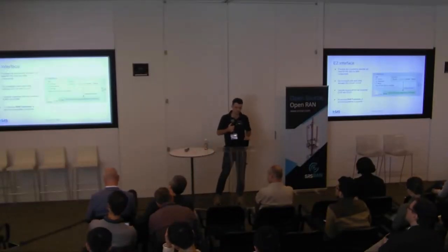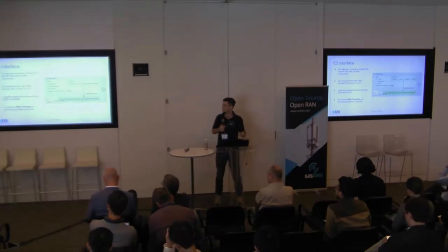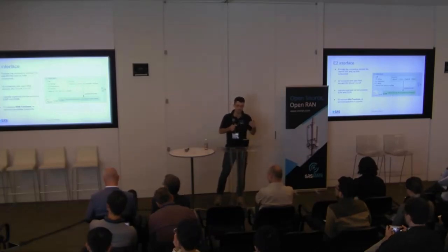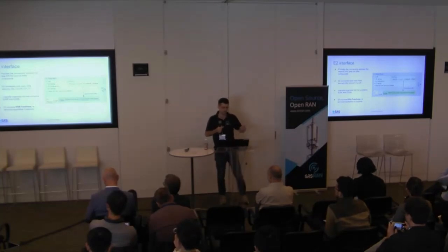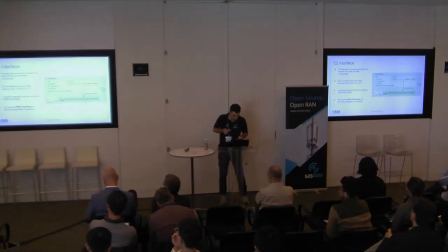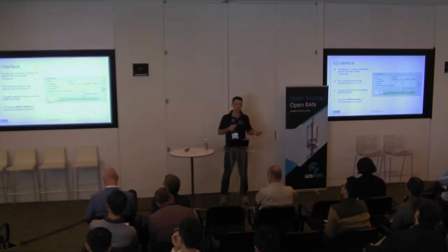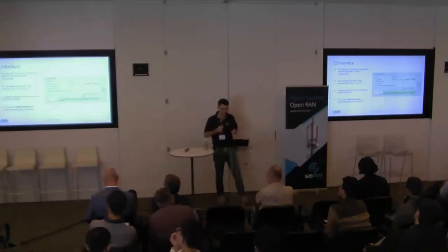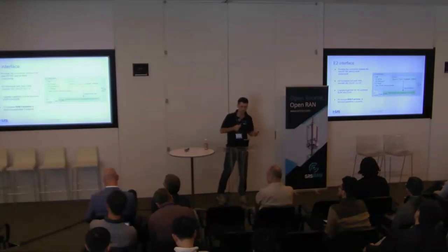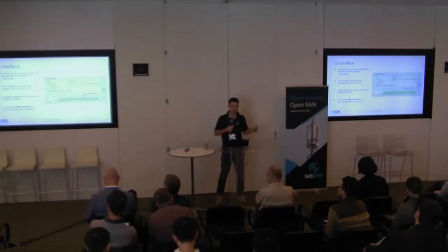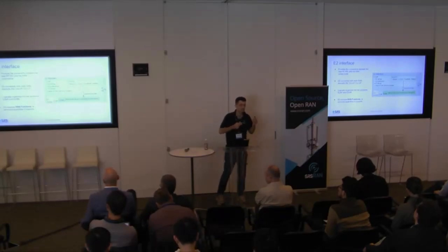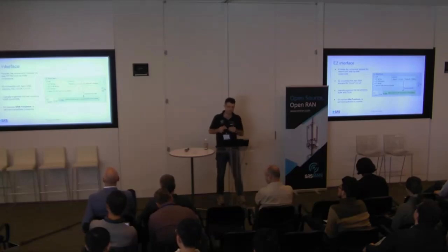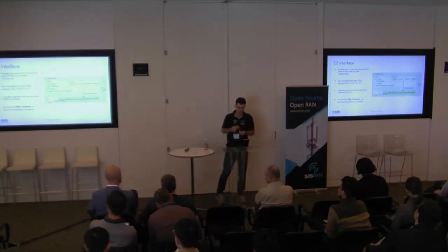The E2 interface is the pipe by which the RIC acts on the RAN and vice versa. There is an E2 connection to each RAN element — to the DU, to the CUCP, and to the CUUP. The actual protocol itself is split between two functions: the E2 app, which is the plumbing and manages the connection between the two, and the E2 SM, which is the business logic that does the actual RAN talk with the RAN.